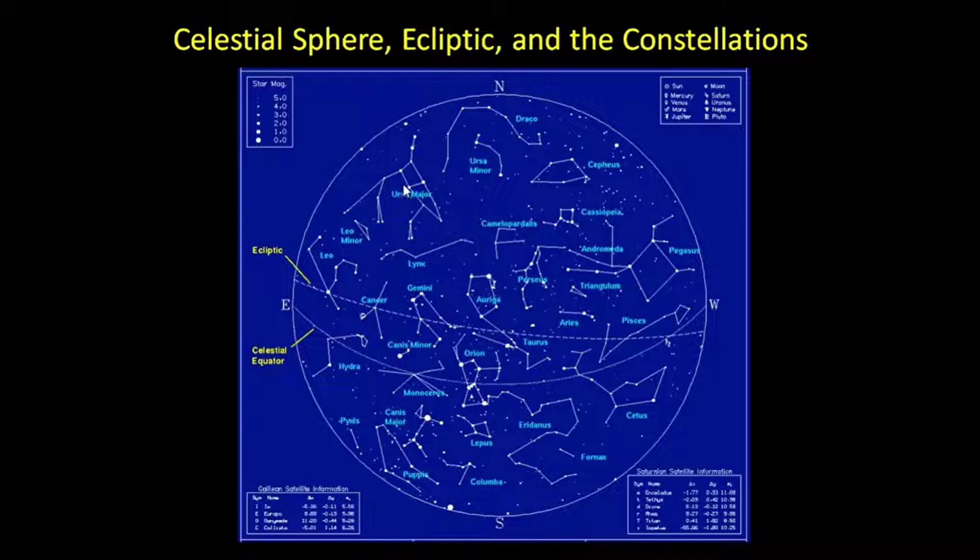Balatik is connected to sea navigation, but primarily it was used to signal the beginning of the planting season. Here are some of the constellations and asterisms commonly known in the Philippines.